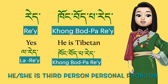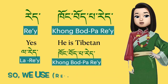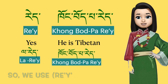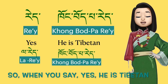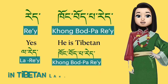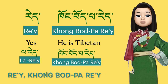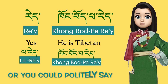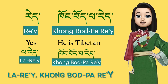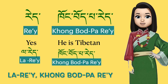If you want to ask 'Is he Tibetan?' — he or she is the third person personal pronoun, so we use 're'. When you say 'Yes, he is Tibetan' in Tibetan language, it is 're', 'khong purpa re'. Or you could politely say 'la re', 'khong purpa re'.